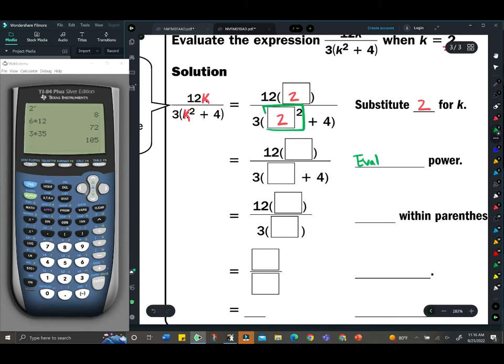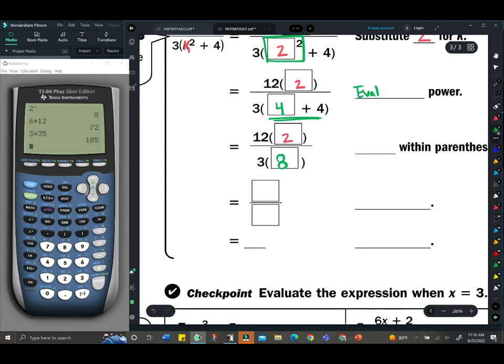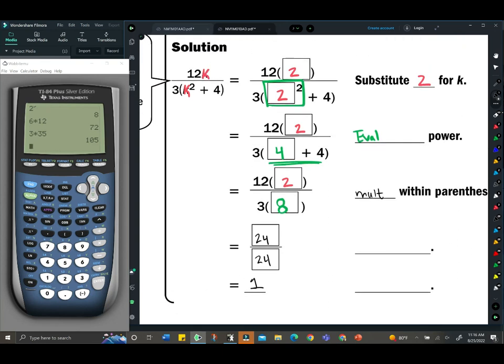Let's work in the parentheses: 4 + 4 gives us 8. Multiply within the parentheses: 12 times 2 is 24 on top, and 3 times 8 is also 24 on the bottom. Hey, 24 ÷ 24 is 1. Keep in mind all the evaluating parentheses and just take your time.